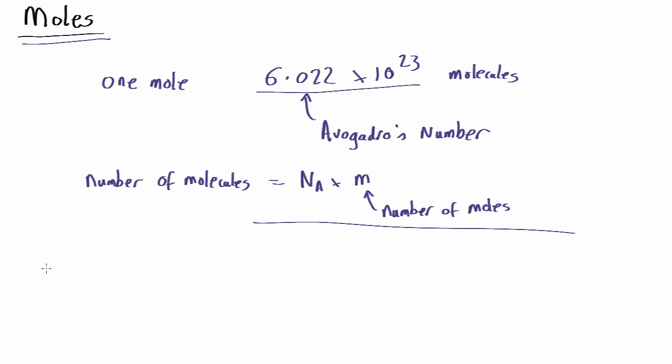The shortcut is that the number of moles is equal to the mass of something in grams divided by the molecular mass. Or if it's not a molecule, if it's just an atom, just divided by the atomic mass.